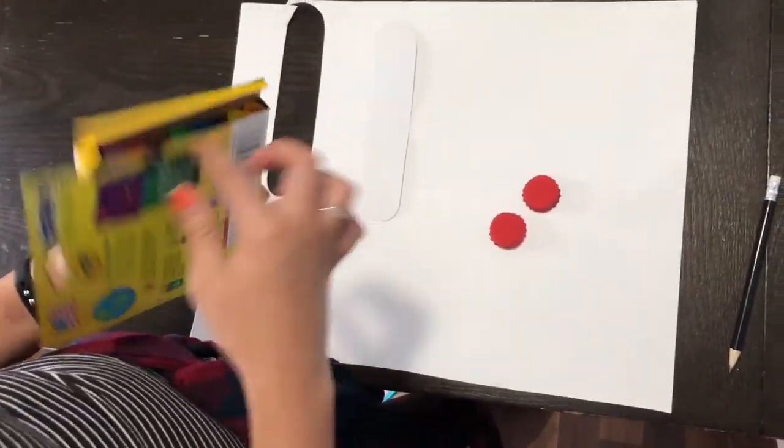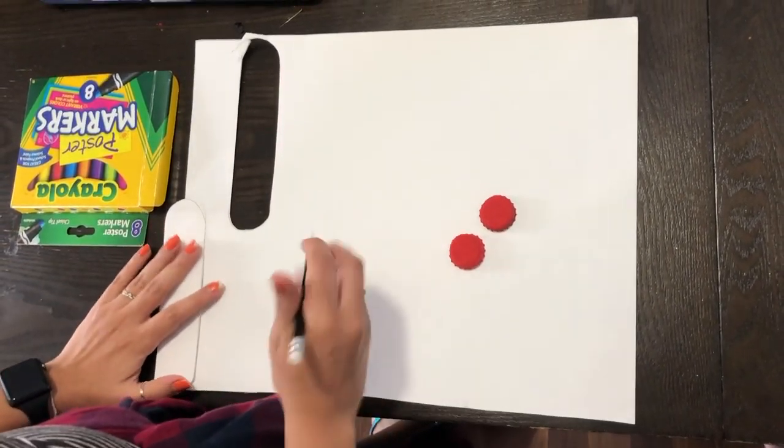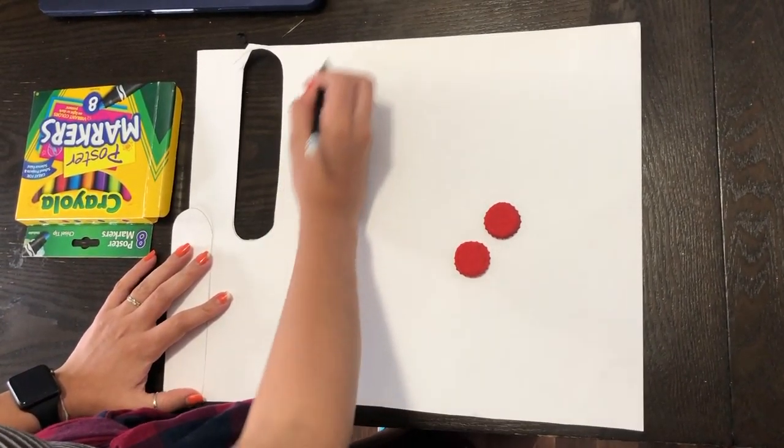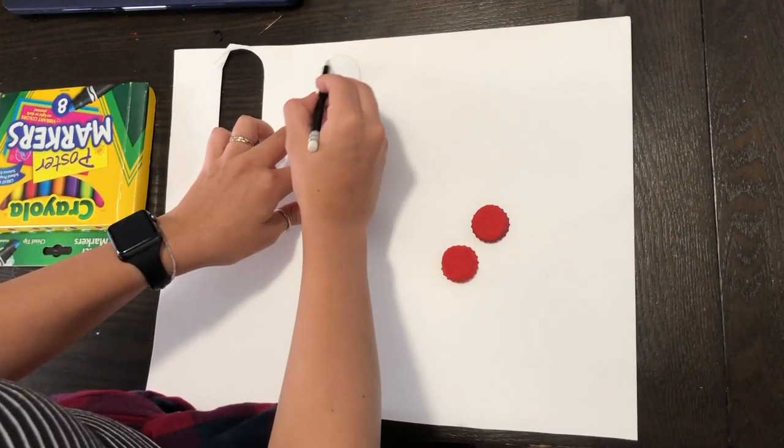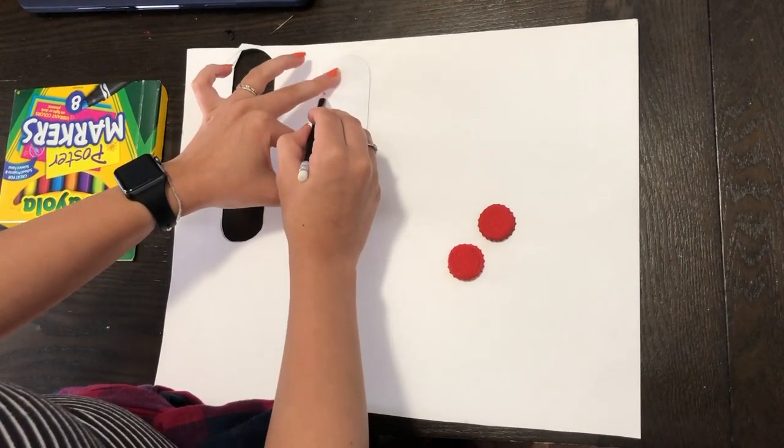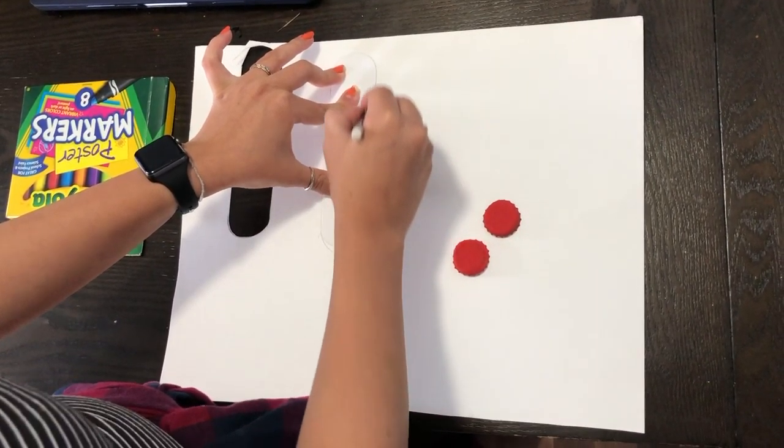But I'm using this one, and then what you're gonna need to do is ask someone to help you draw this shape, or you can try to draw it and then whoever's helping you can help you out. So you're just gonna draw the shape. I'm tracing this one, I already cut one out but it doesn't have to be perfect.